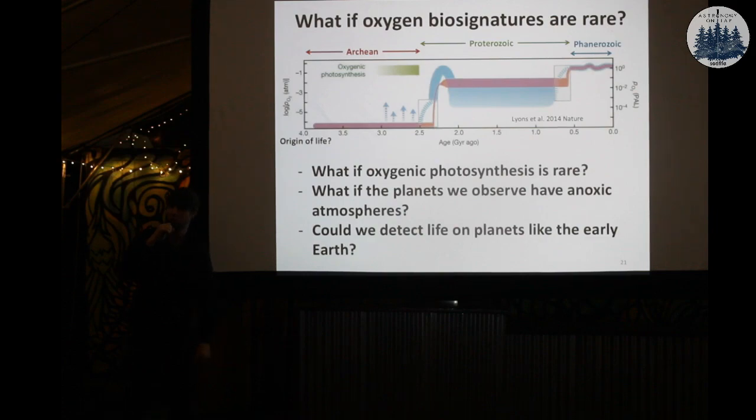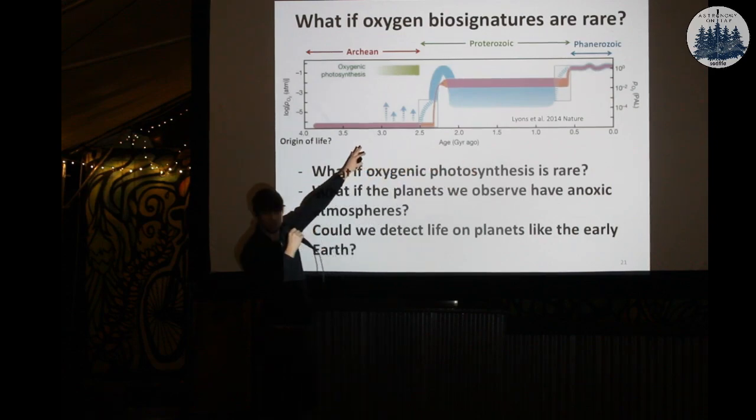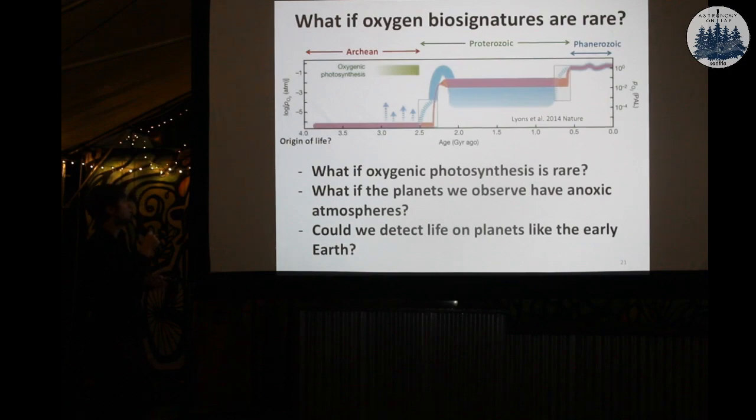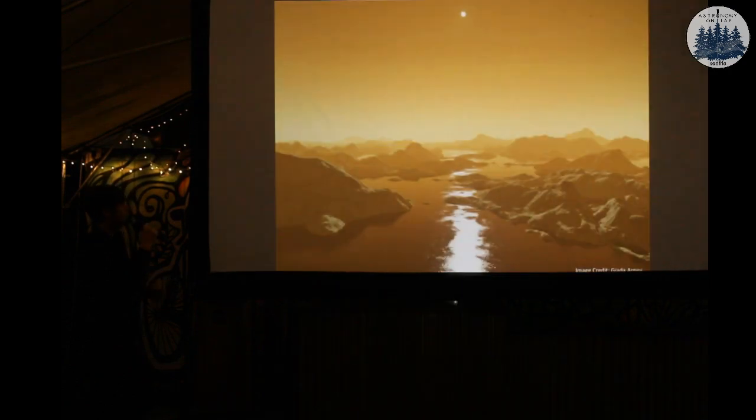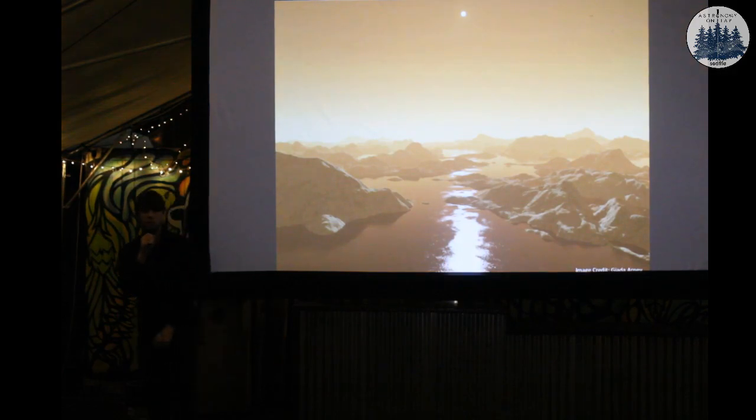So what we'd really like to be able to do is to detect life on these sorts of planets, right? These early Earth kind of planets that are more typical of Earth's history. So how might we do that? Well, as a starting point, you want to reconstruct what the early Earth was like as best you can and create a picture of that.